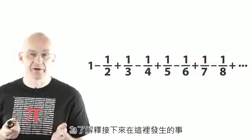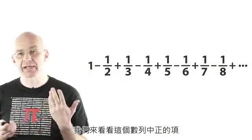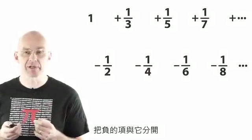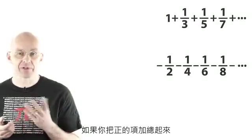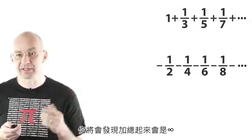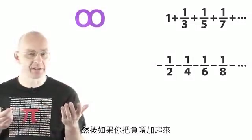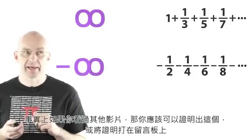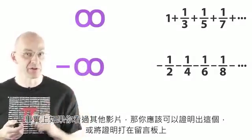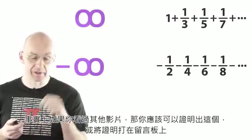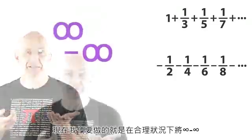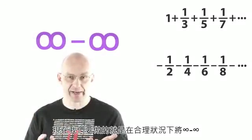To explain what's going on here, let's have a look at the positive terms and the negative terms separately. If you just add up all the positive terms, you'll actually find you get infinity. And if you actually add up the negative terms, you get minus infinity. And actually if you've watched the other video, you should be able to prove that yourself. So what we're really doing here is we're subtracting infinity from infinity in a controlled manner.